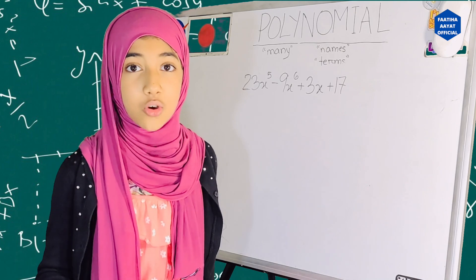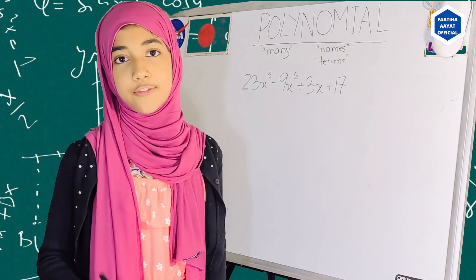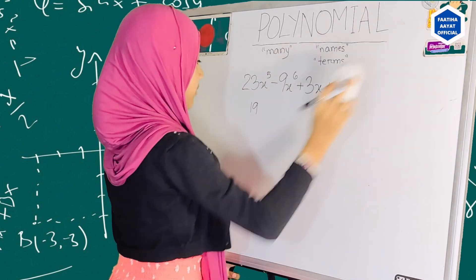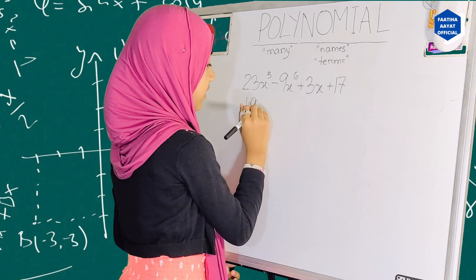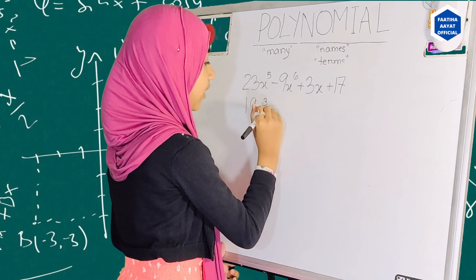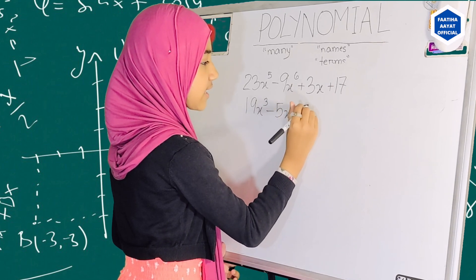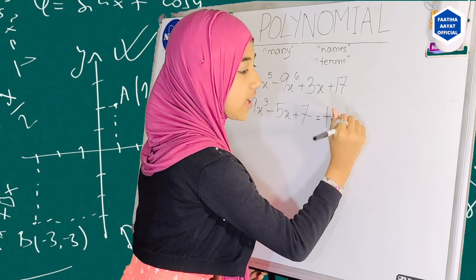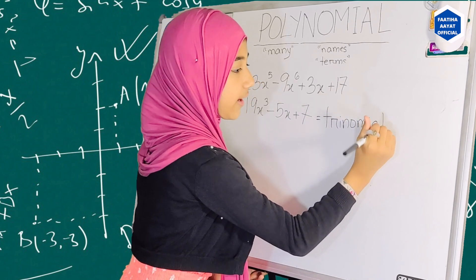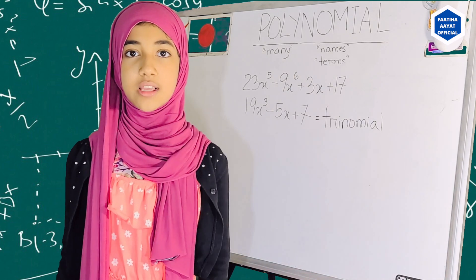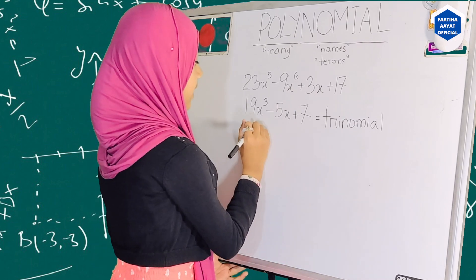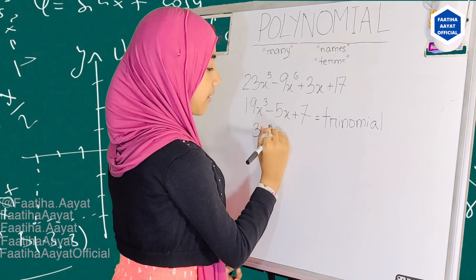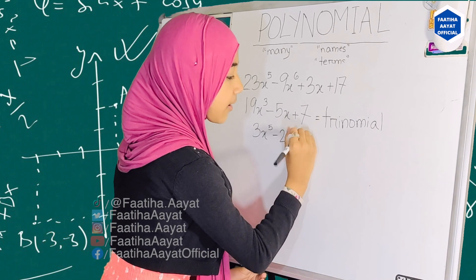Now let me show you three more things. First, I'm going to show you a trinomial. A trinomial is when there are three terms. For example, 19x to the power three, minus 5x, plus 7 — this is a trinomial. What is the name for one with two terms? That is a binomial. An example of a binomial is 2x to the power five minus 2.